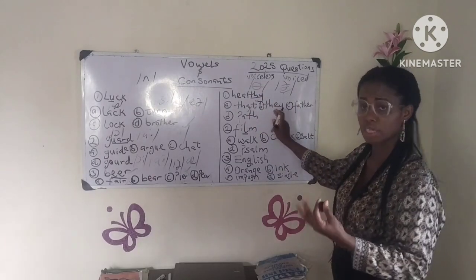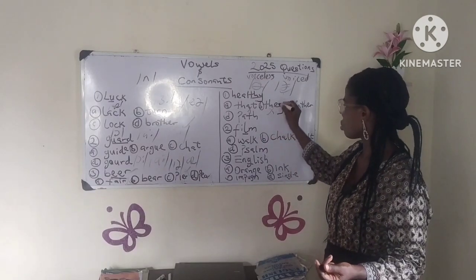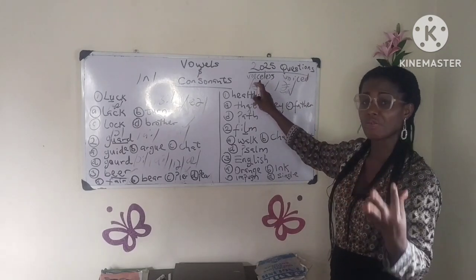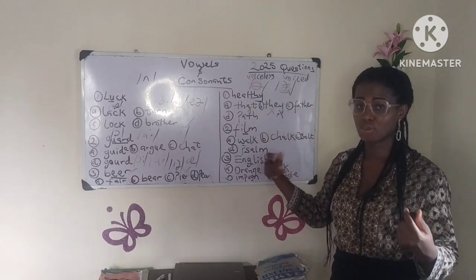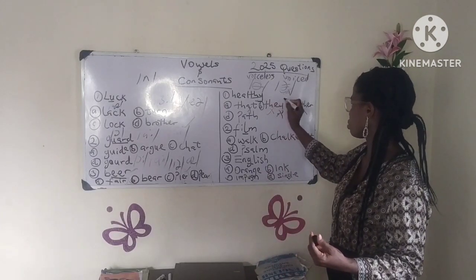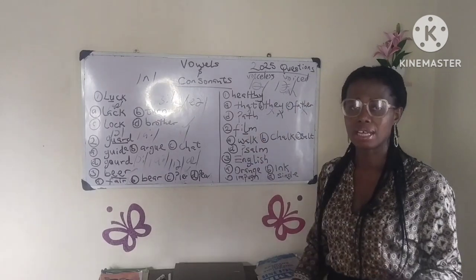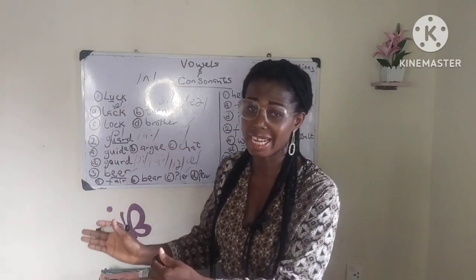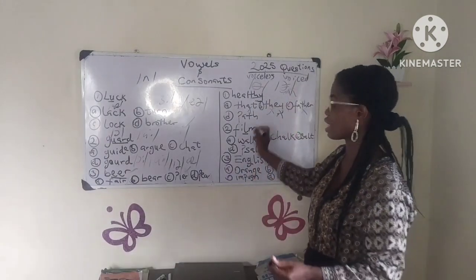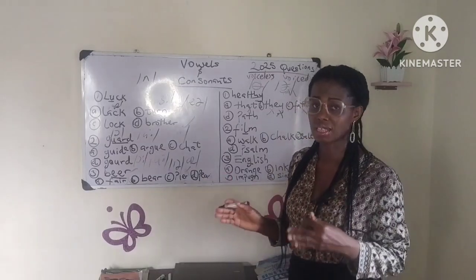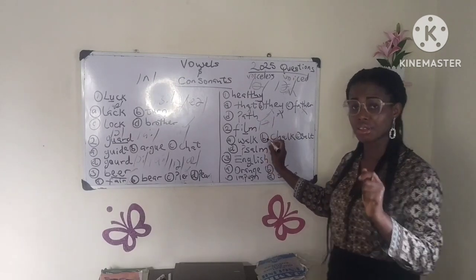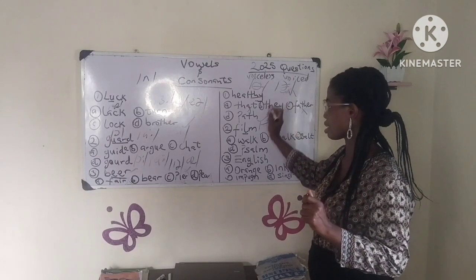So THAT — we typically say 'dat' in Nigeria, which means the right sound is ð, the voiced one — so THAT is incorrect for matching HEALTHY's voiceless θ. THEY — we say 'dey', so again that's the voiced ð — also incorrect. FATHER — we say 'fada', so the T-H is voiced ð — not correct. Now PATH: we say 'pat' in Nigeria, so the T-H should be θ, the voiceless sound — just like in HEALTHY. So PATH is the correct answer.